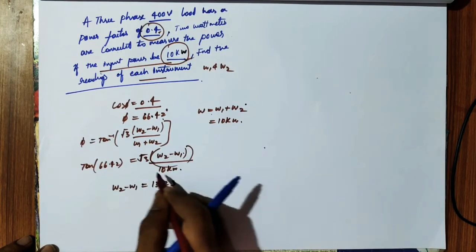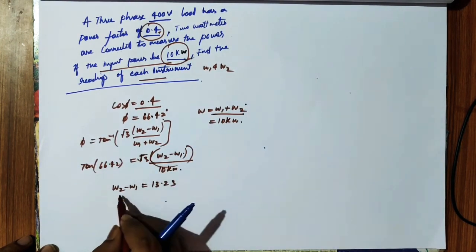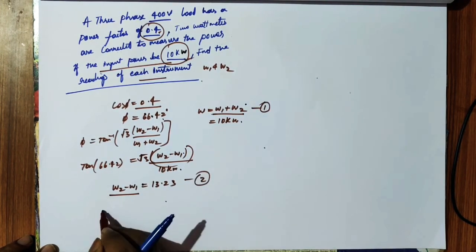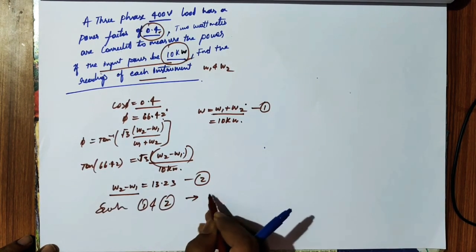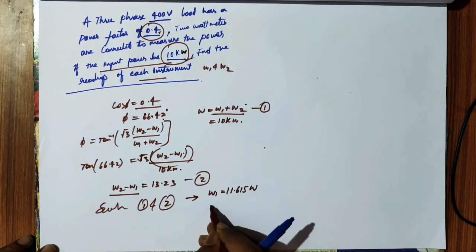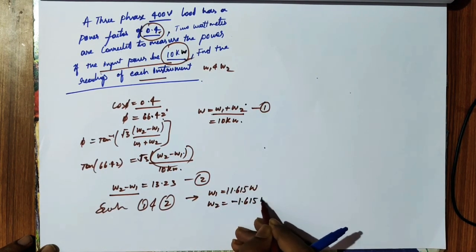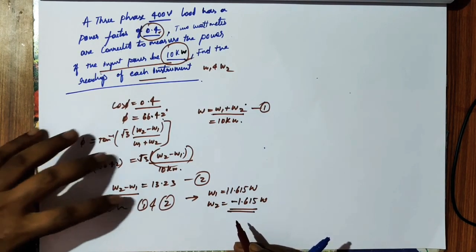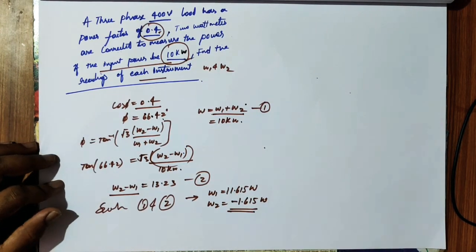We now have two equations: W1 + W2 = 10 kilowatts (equation 1) and W2 - W1 = 13.23 kilowatts (equation 2). Solving simultaneously gives W1 = -1.615 kilowatts and W2 = 11.615 kilowatts. The answers are embedded directly in the formulas.